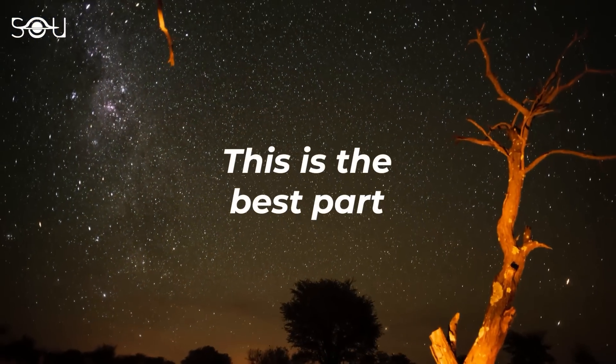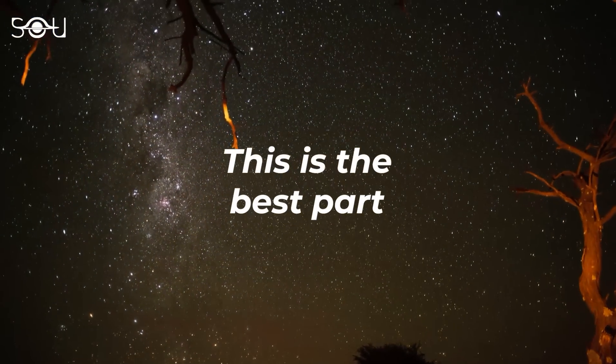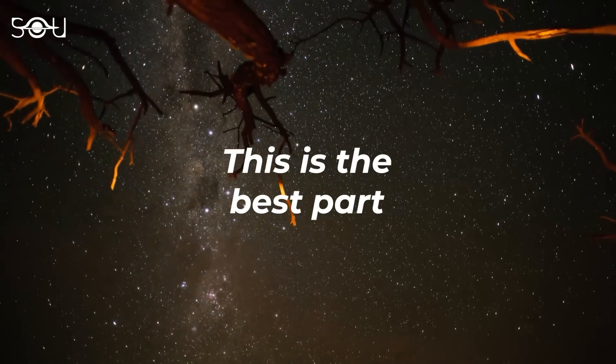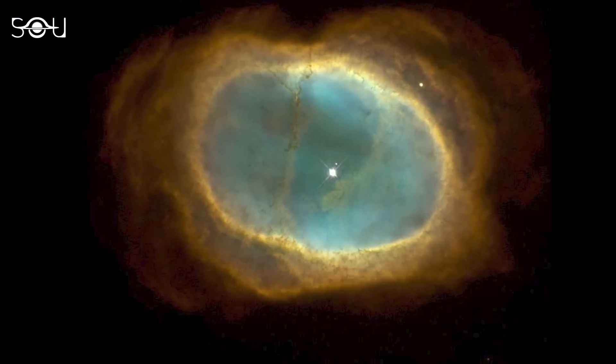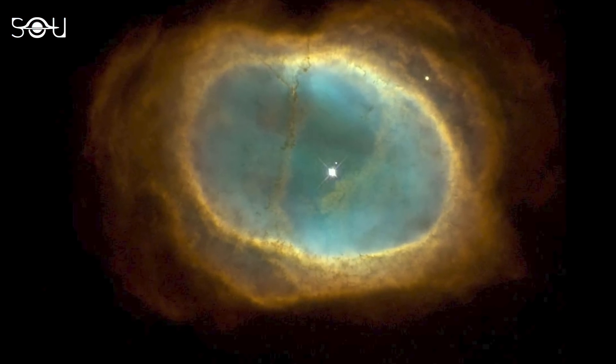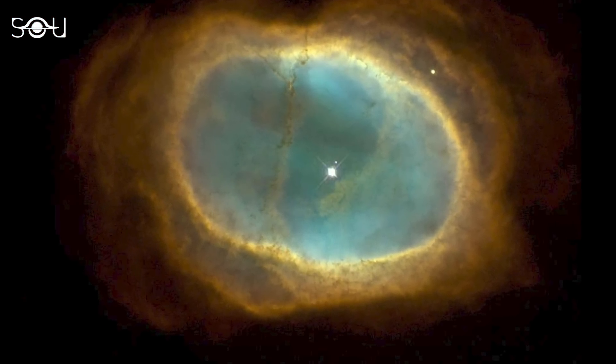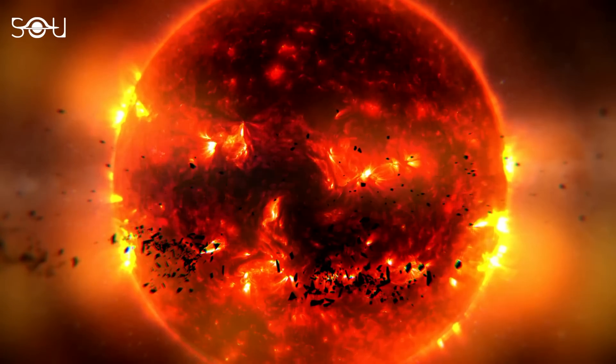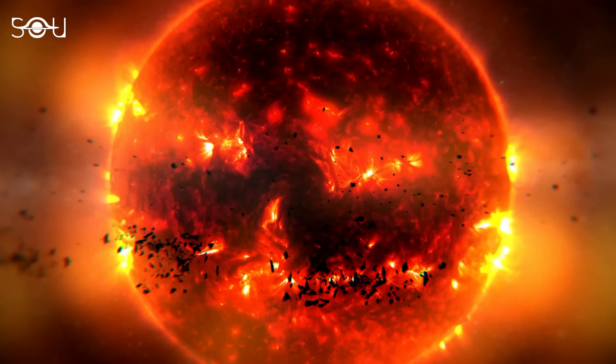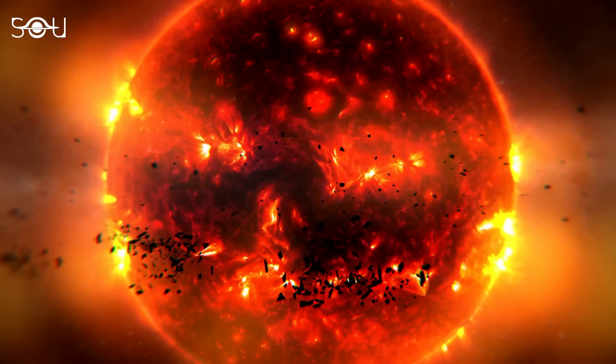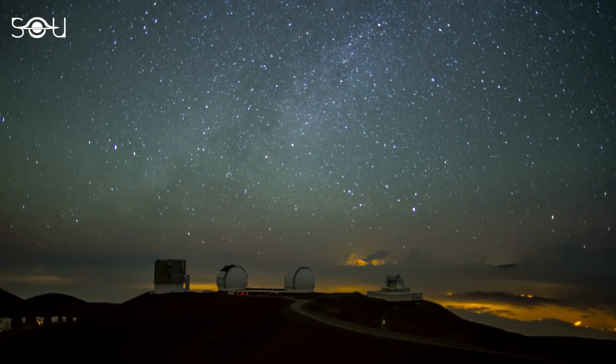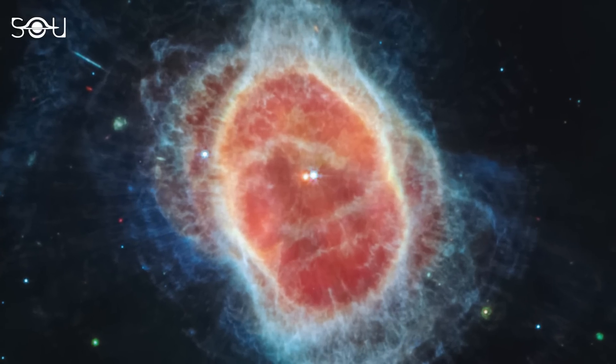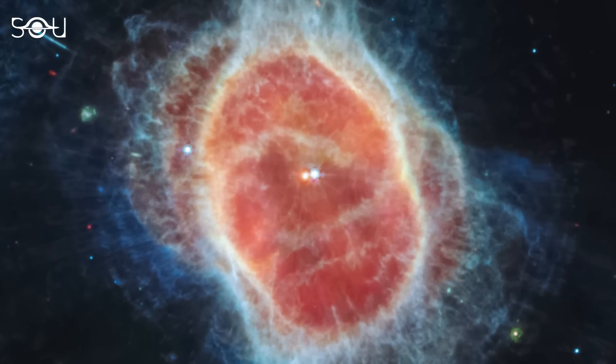The best thing about Webb's image of the Southern Ring Nebula is that it revealed something that astronomers predicted long ago. The bright star you see in the Hubble image of this nebula is in an early stage of evolution, so astronomers knew that a dying star must be nearby that was responsible for the Southern Ring Nebula. Unfortunately, however, no telescope could ever find it, but Webb's advanced infrared capabilities did the job.